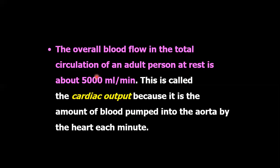The average blood flow in an adult person at rest is 5000 milliliters per minute, or 5 liters per minute. This is also called cardiac output. Cardiac output is the amount of blood pumped into the aorta by the heart in each minute.